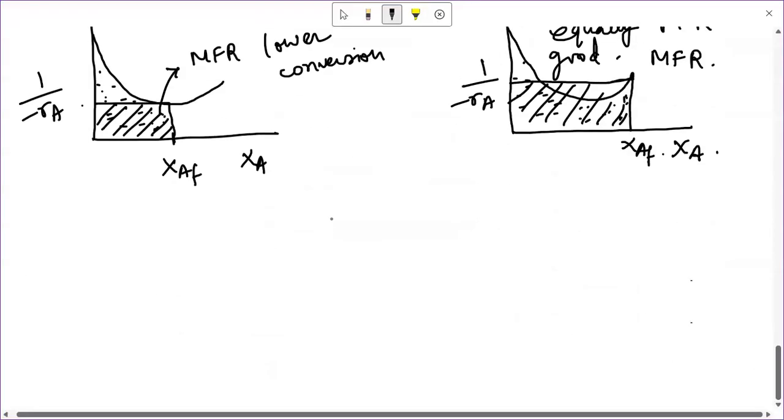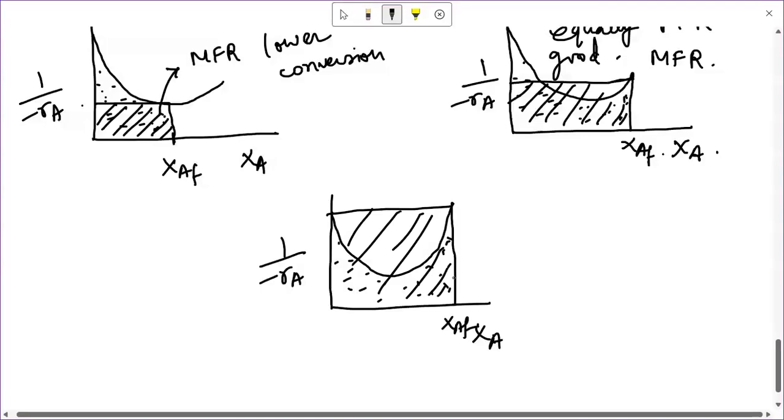Let's take another case. So you have xA again and 1 by minus rA, and you have a rate curve like this. Now let's say you want this final conversion. If you now use a plug flow reactor and if you use a mixed flow reactor, you see the plug flow volume is much lesser. So we would like to go for plug flow reactors in higher conversions.